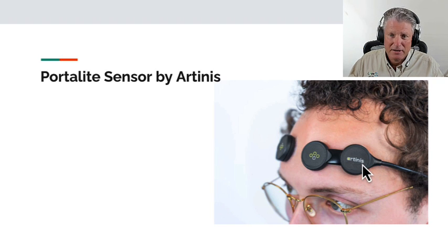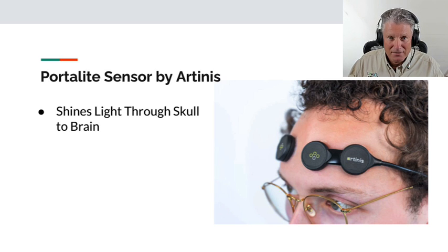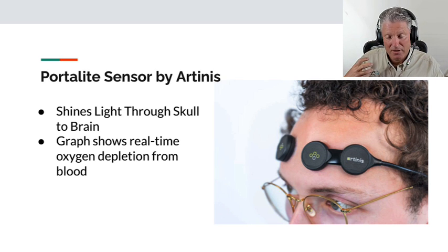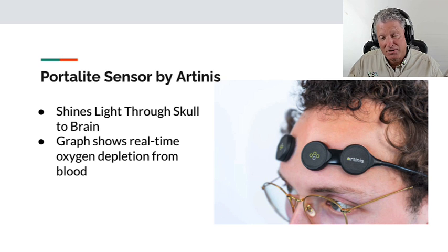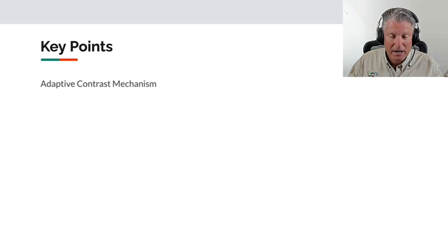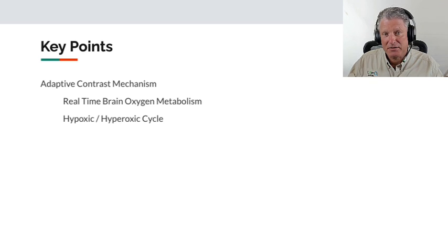We also used a portal light sensor by Artinus. It's two light-emitting assemblies that shine light through the skull into the actual brain, measuring oxygenation and deoxygenation of the blood — the difference between oxygen and deoxygenated blood tells you how much oxygen the brain actually used. This gives a real-time picture of how much energy is being produced in the brain during the workout.